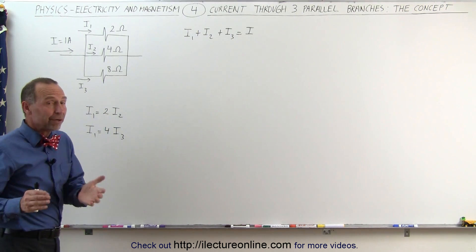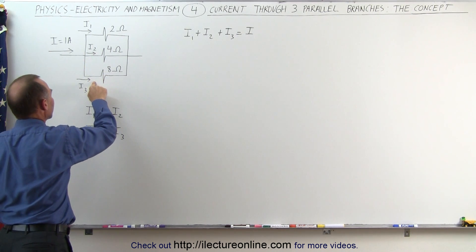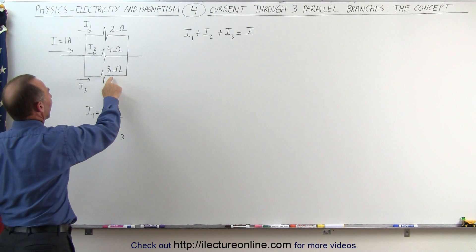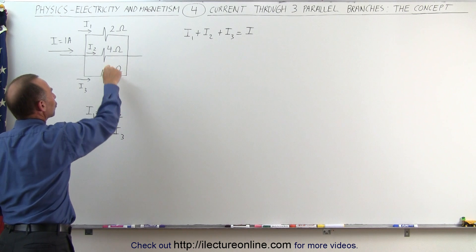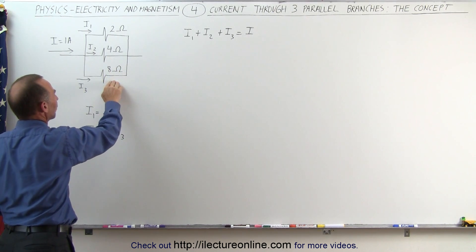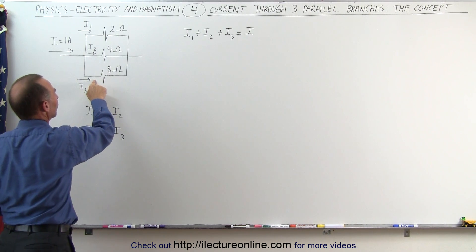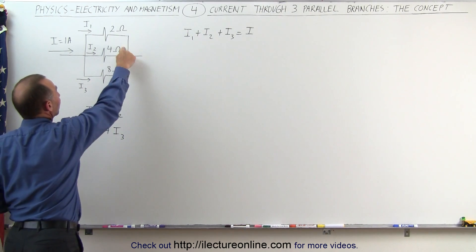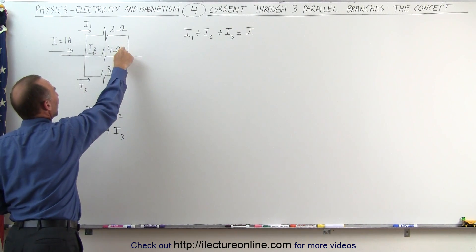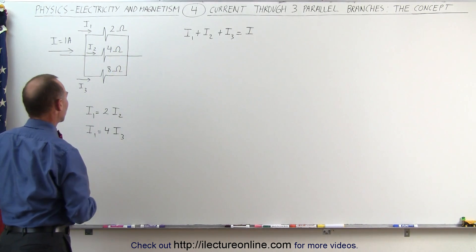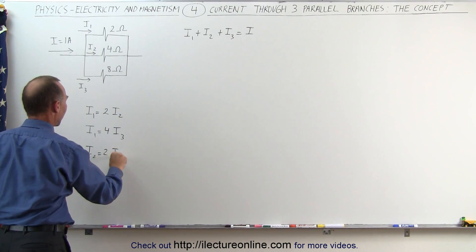One more comparison: I2 versus I3. The bottom branch has twice the resistance relative to the middle branch — twice the resistance means half the current. Whatever current flows through the middle branch, only half of that will flow through the bottom branch. Or in reverse, since the middle branch has half the resistance, it carries twice the current. So I2 is equal to twice I3.